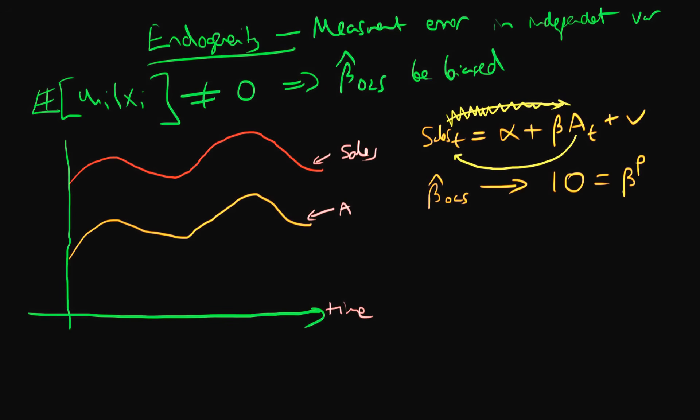But what happens if I don't measure advertising perfectly? Well let's think about it if there was some small error. This blue line here now reflects the level of advertising which we actually measure, M, which is the measured level of advertising related to the true level of advertising plus some small error V.